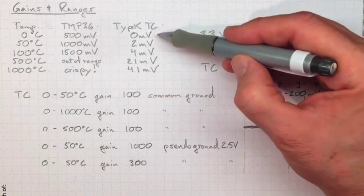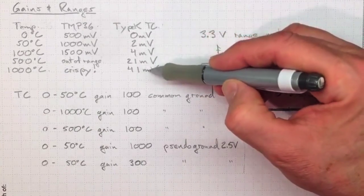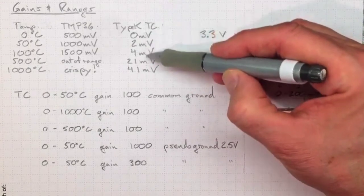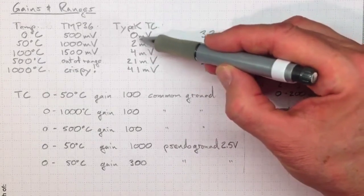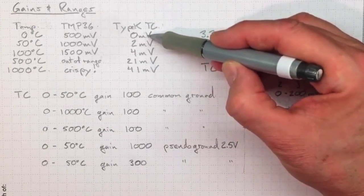A type K thermocouple gives us a much lower voltage output, going from zero up to about 41 millivolts over that thousand degrees Celsius range. Depending on where we're trying to measure in that range, down in the low temperatures or up to higher temperatures, we'll choose different input ranges and gains.